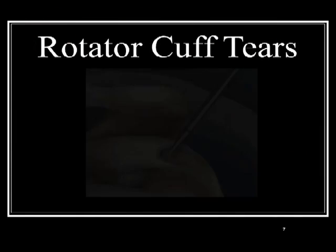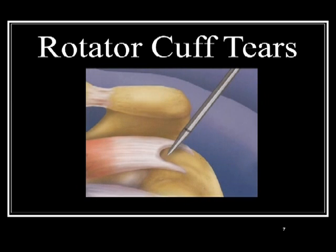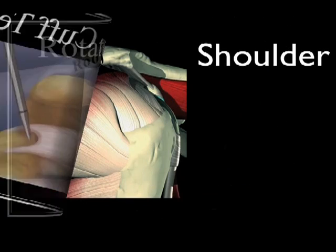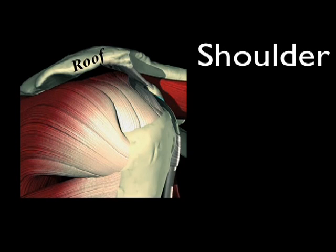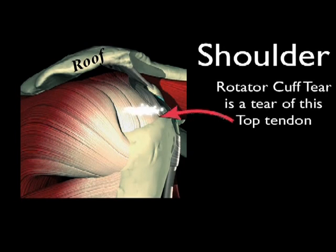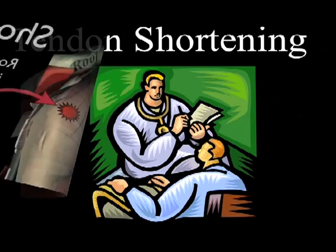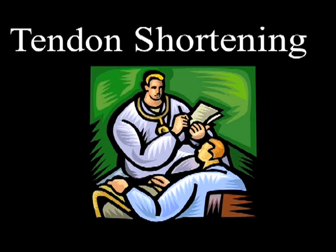A rotator cuff tear is a disruption of the top flat tendon before it inserts into the lateral shoulder. Using our original anatomic shoulder drawing, one can readily appreciate the location of a typical rotator cuff tear. An important aspect of rotator cuff injury is progressive shortening of the tendon. This shortening, as we will see, has implications ranging from treatment choice to surgical outcomes.